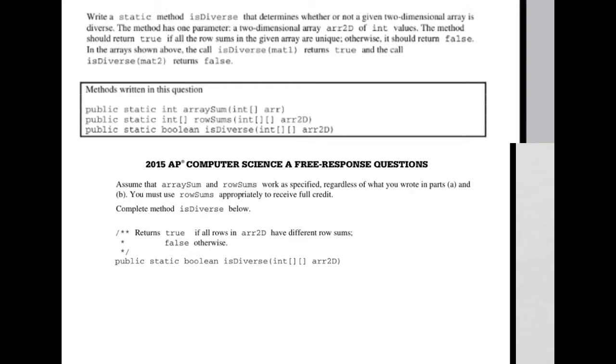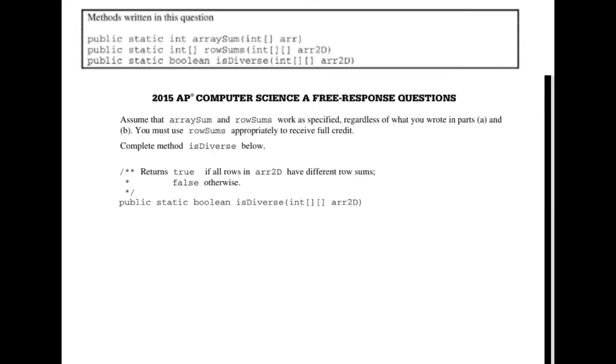So what we need to do is use that. And really, all that's saying is search through this and make sure no two numbers are equal to each other. That's all it's saying. So the first thing that we have to do for this method is to call this so that we have a 1D array that has the sums of those rows. So that's what I'm going to do.